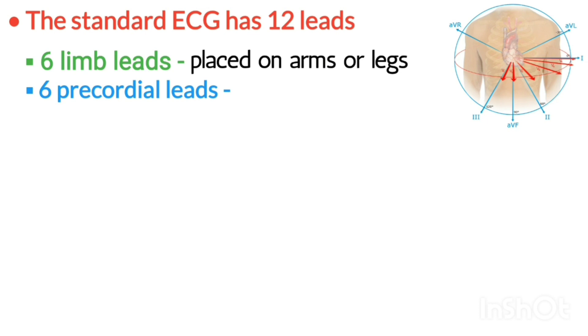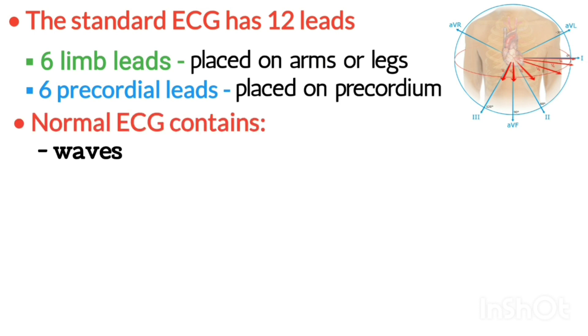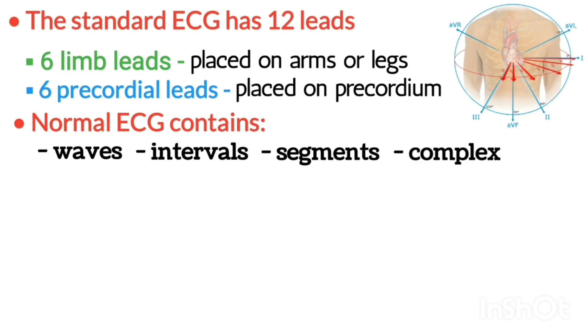The other six leads are considered precordial leads because they are placed on the torso, or precordium. A normal ECG contains waves, intervals, segments and one complex, as defined below.